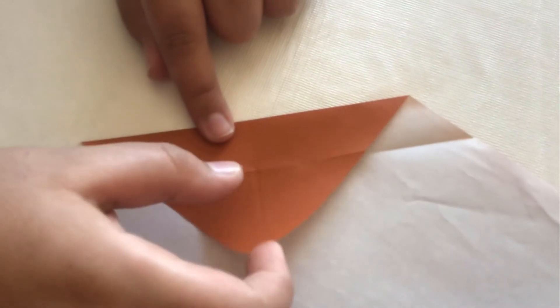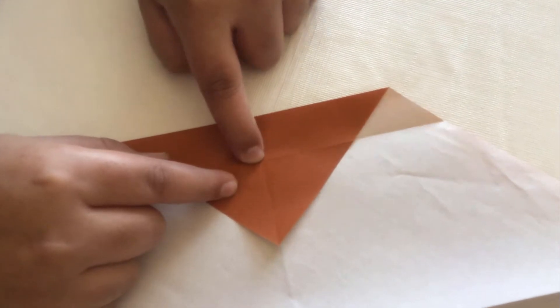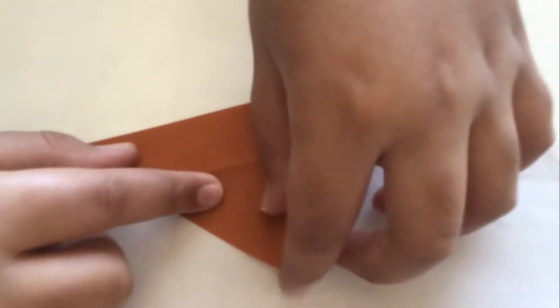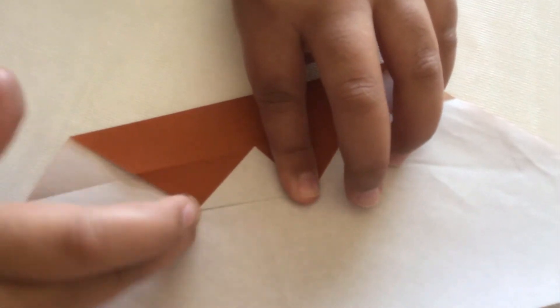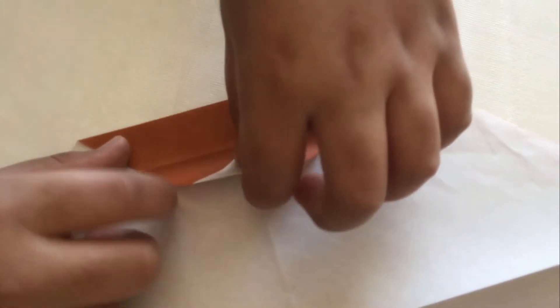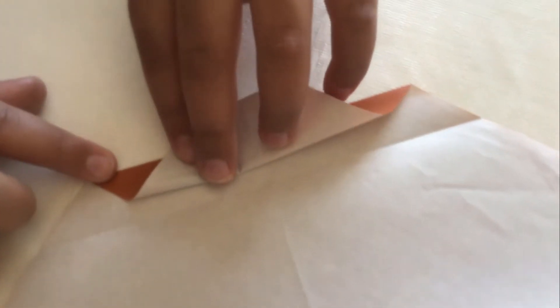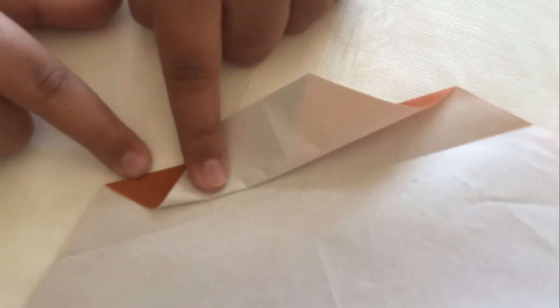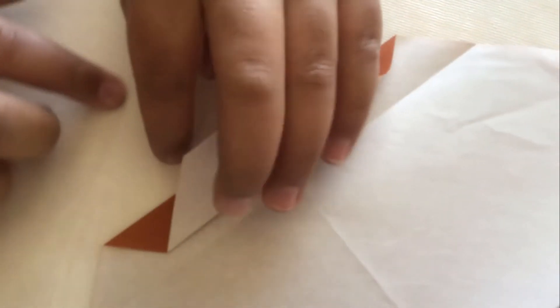And take this corner and fold it to this middle edge. Fold it like that. Crease strongly. Then fold it like this with just this much space left. Just a bit more. And crease.